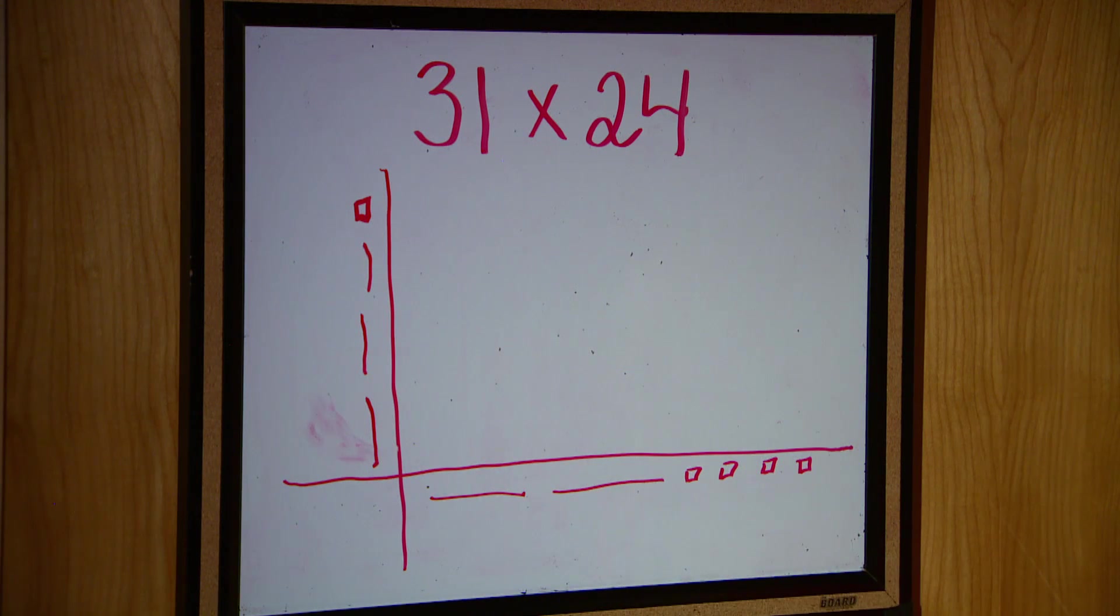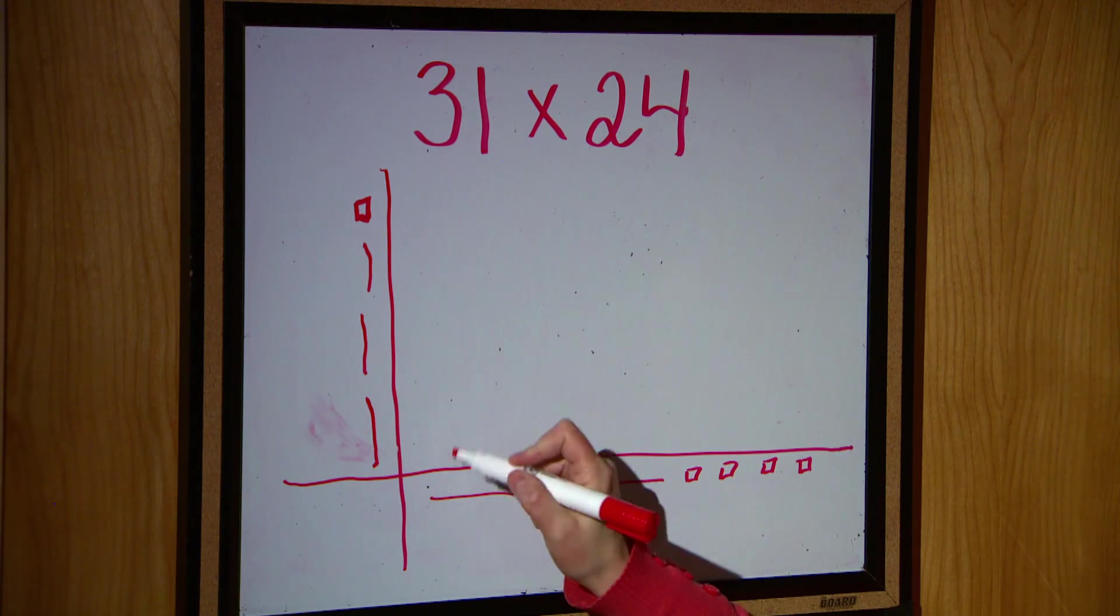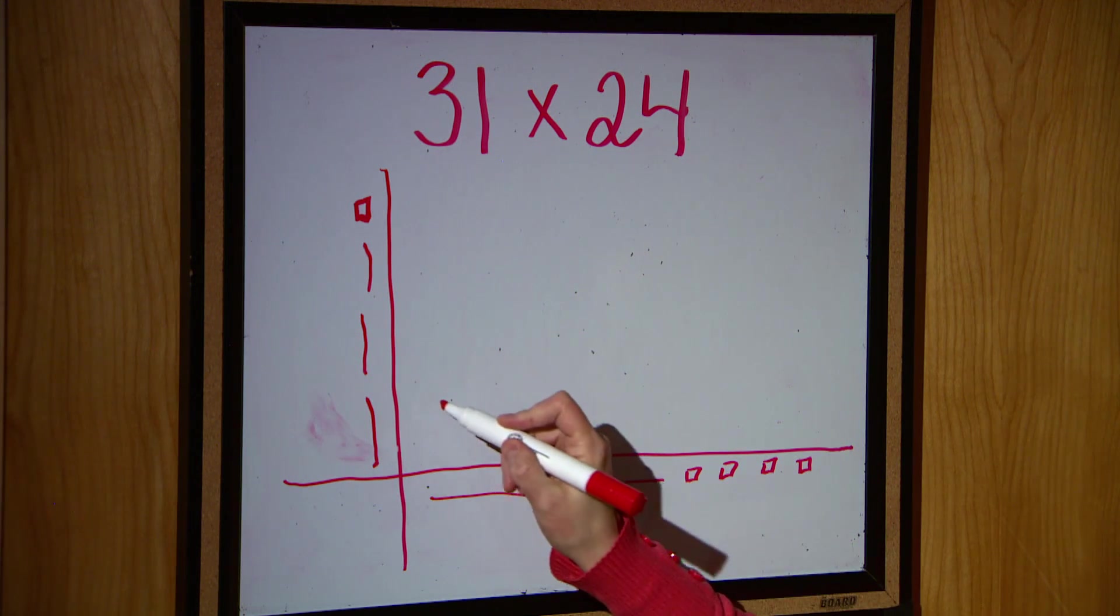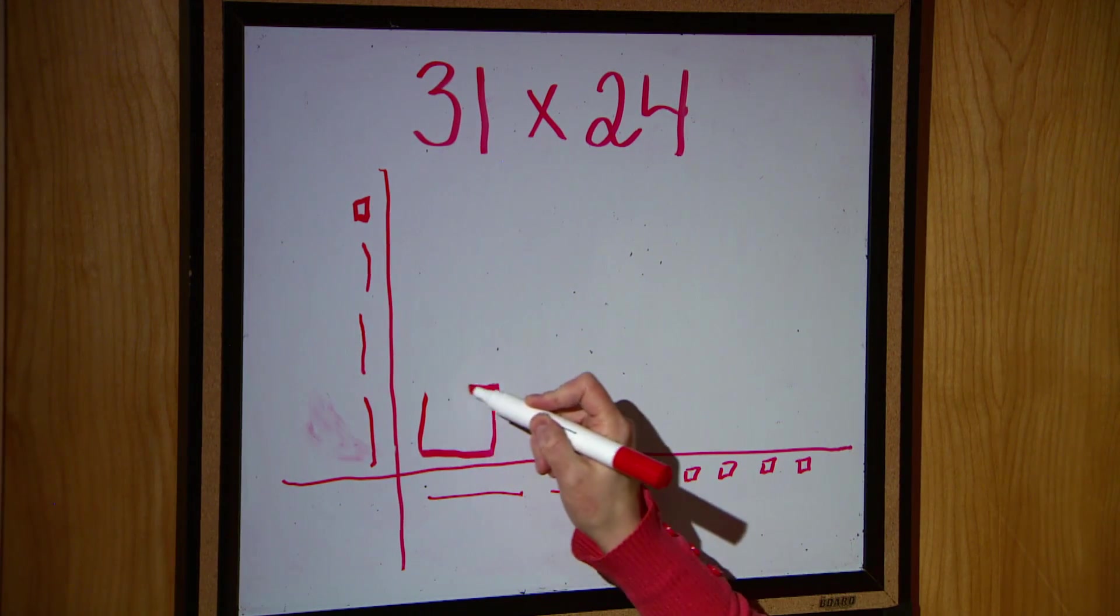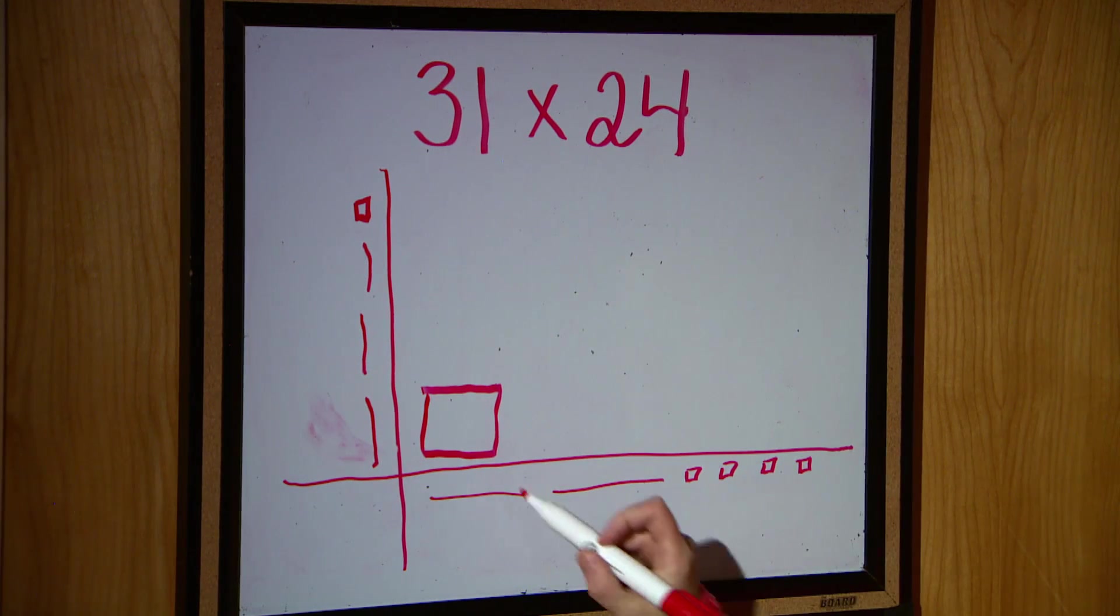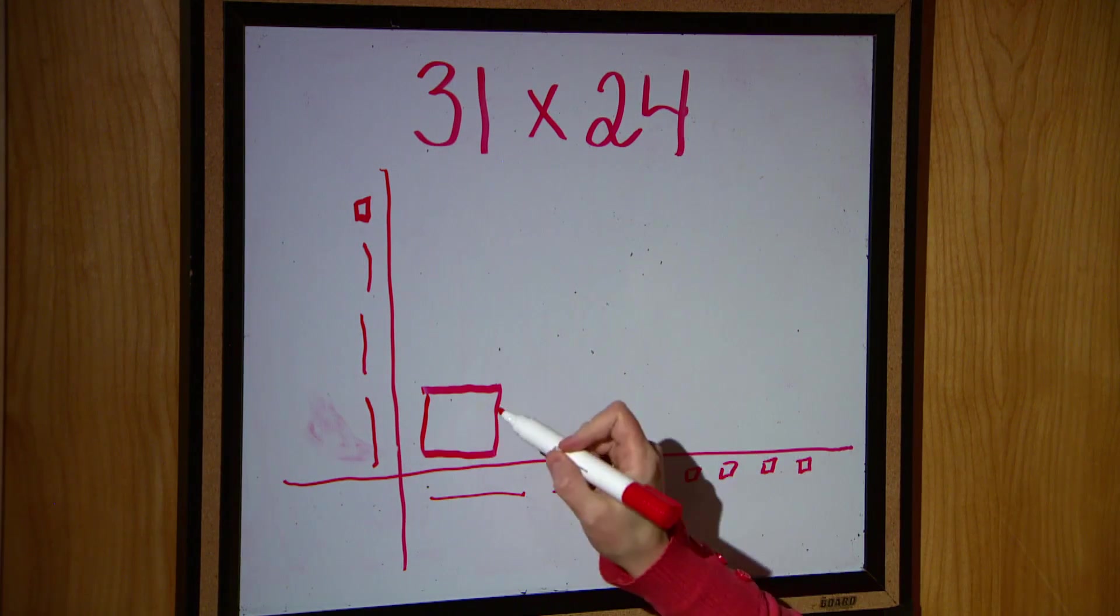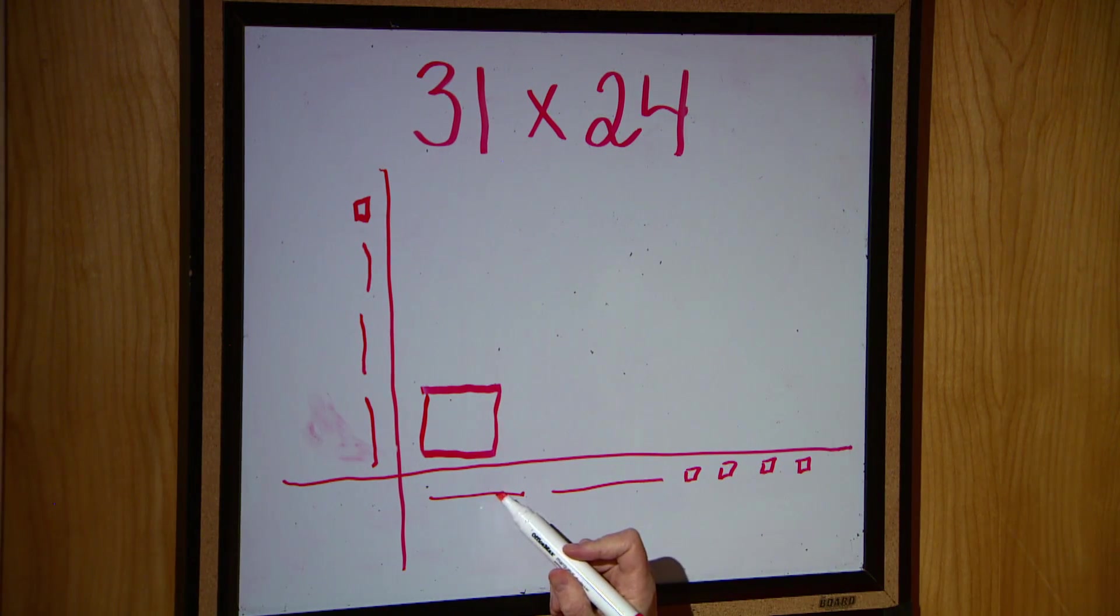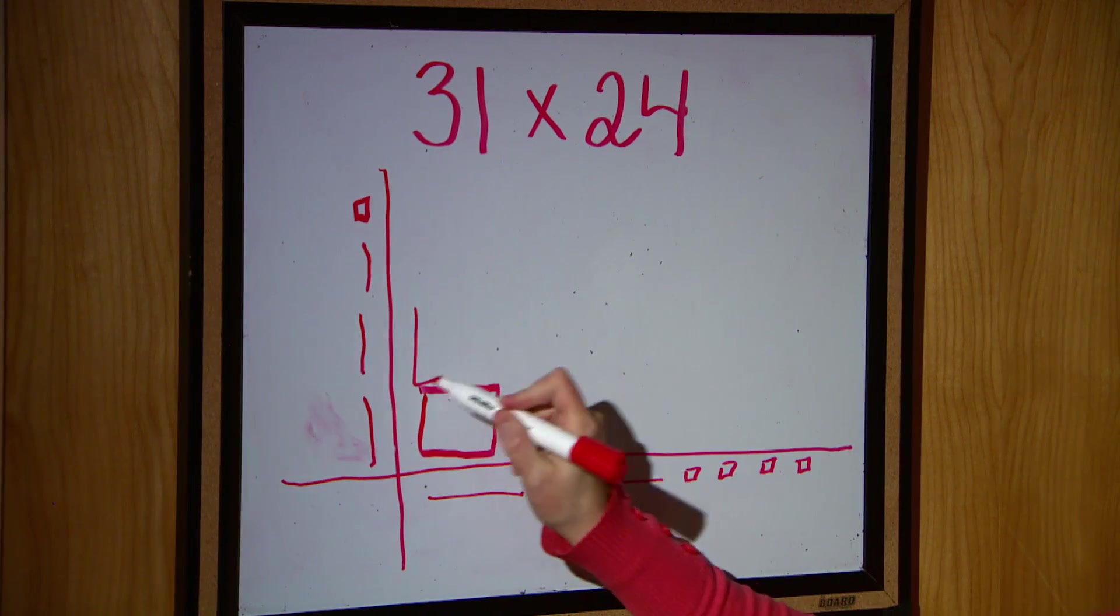Well, people are going to know that 10 times 10 is 100, but I'm not going to write 100 in here. I am instead going to use my concrete material, my manipulative, and my concrete material is a flat. 10 groups of 10 is 100, and a flat represents 100. I can repeat that process right here.